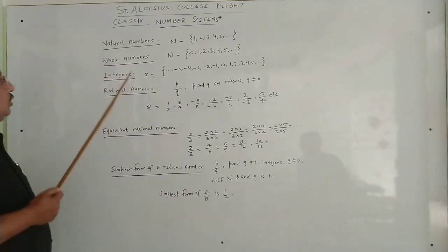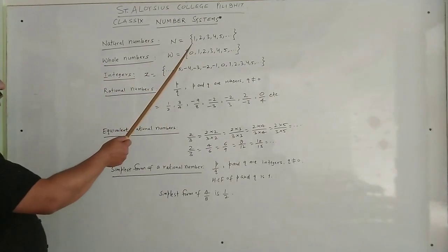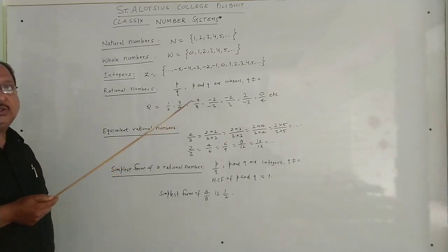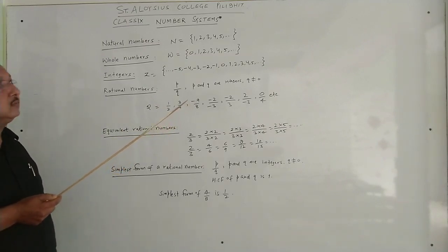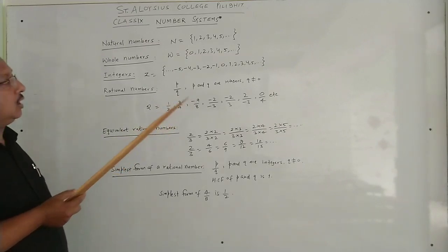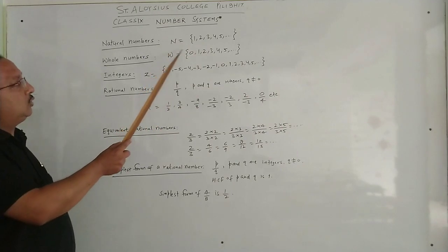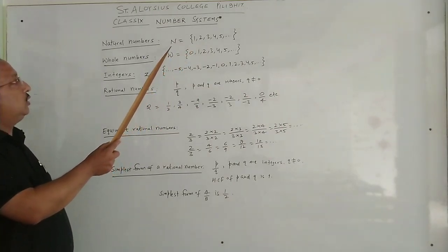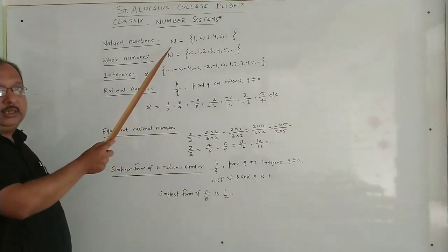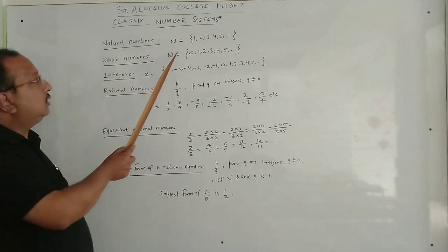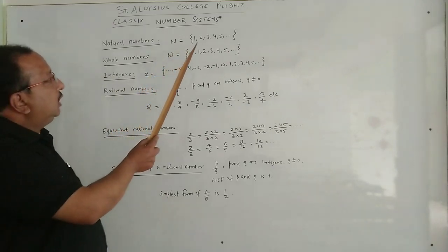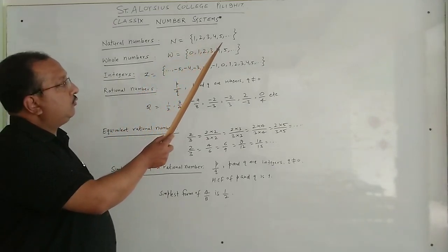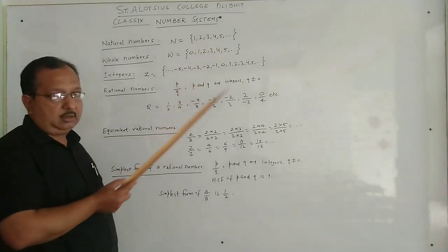Natural numbers are very well known to you — they are counting numbers. All the counting numbers are called natural numbers. Natural numbers are denoted by the capital letter N. They are 1, 2, 3, 4, 5 and so on.